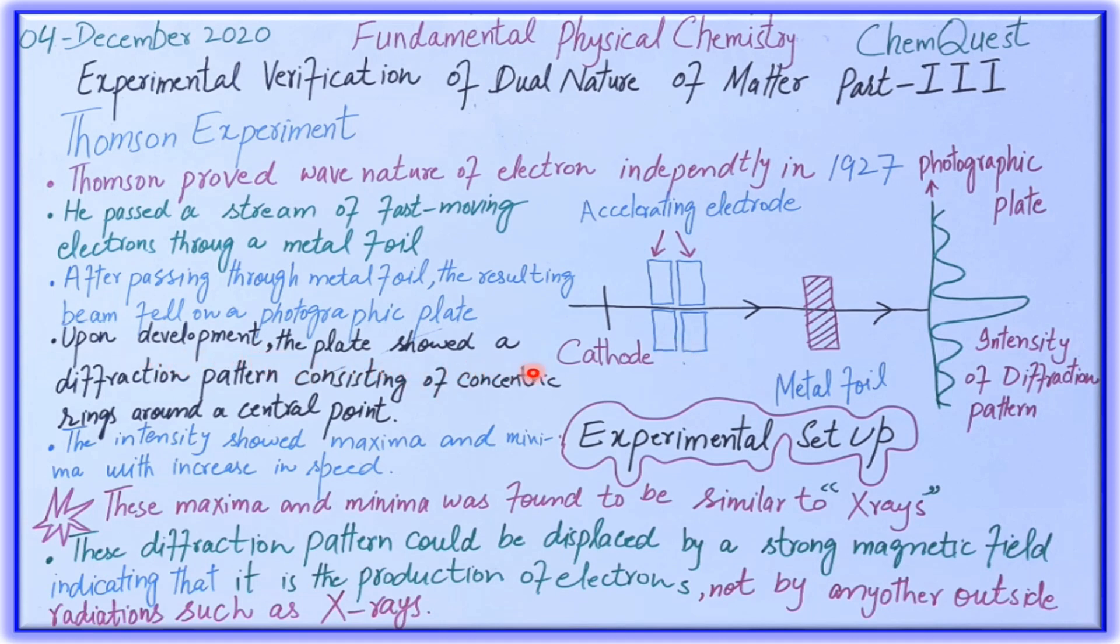Upon development, the plate showed a diffraction pattern consisting of concentric rings around the central point. When it comes to this photographic plate, the diffraction pattern appears as rings. For example, this was one ring, then another ring, then another ring, and so on in the form of rings around this central point.